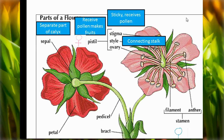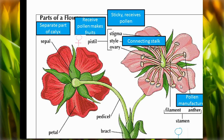The stamen is the male part and the pistil is the female part. Stamen is made up of filament and anther. Anther is the pollen manufacturer — it is responsible for manufacturing pollen in the flower. The filament connects the anther to the ovary where the seed is produced.